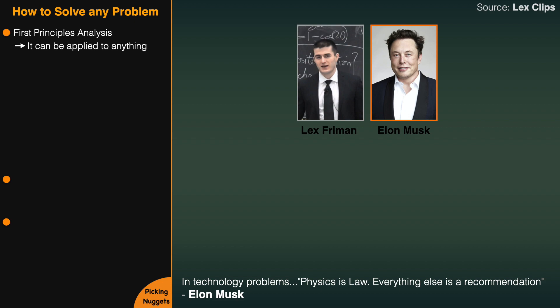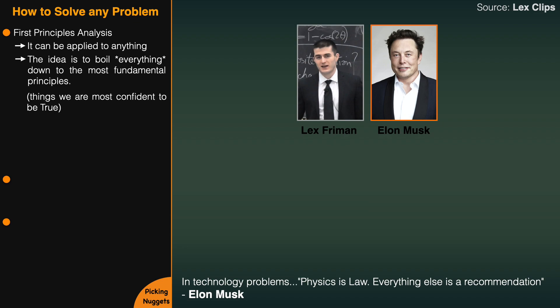It's really just saying: let's boil something down to the most fundamental principles — the things that we are most confident are true at a foundational level. That sets your axiomatic base. And then you reason up from there, and you cross-check your conclusion against the axiomatic truths.